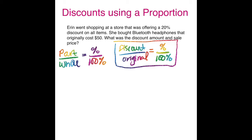Now let me find those different pieces in my word problem. I'm going to grab my highlighter and highlight those. The original cost was $50, and I have a 20% discount. In the question, we're looking for the discount, so that will be my variable. Let's set up that proportion: discount over original equals percent over 100%. The discount is missing so I use X over $50 equals 20% over 100%.